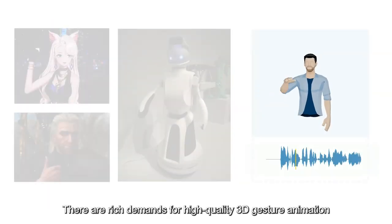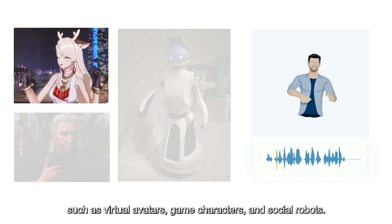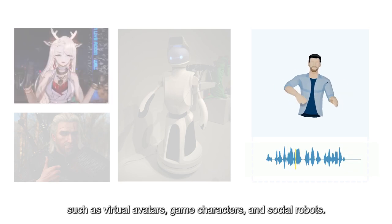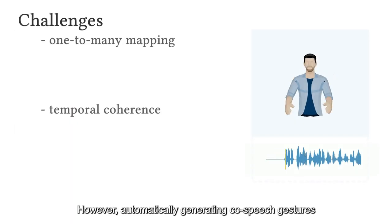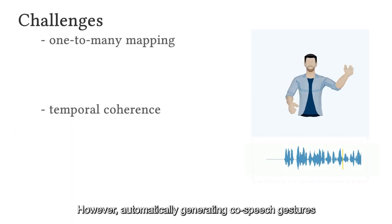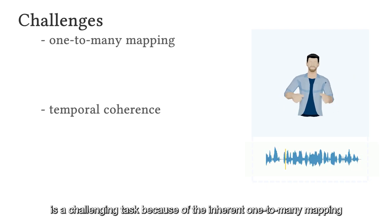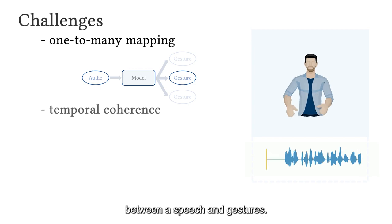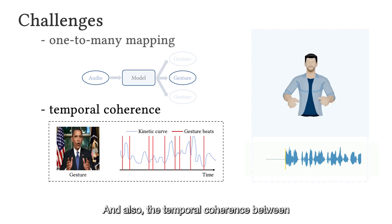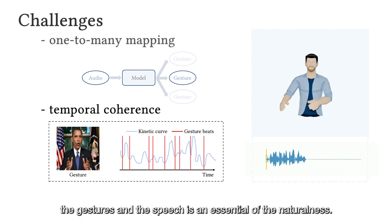There are rich demands for high-quality 3D gesture animation in many industries, such as virtual avatars, game characters, and social robots. However, automatically generating co-speech gestures is a challenging task because of the inherent one-to-many mapping between speech and gestures. Also, the temporal coherence between the gestures and the speech is essential to naturalness.